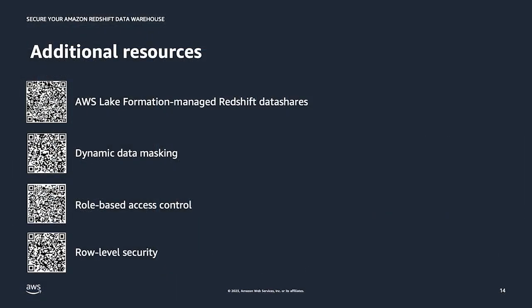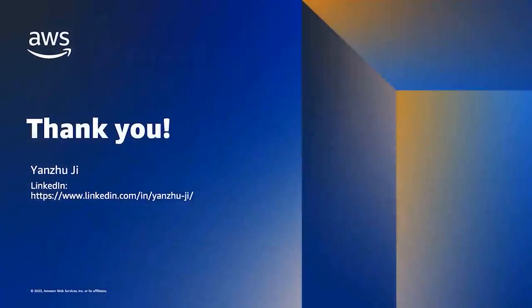That's it for the demo. I'm happy to have spent time walking through these six features for you. You can use them to build your access control and federation with Amazon Redshift native solutions. Here are some resource links — you can scan the QR code to get into the documentation, read through, and try it out on your own platform. Thank you for being with me. Here is my LinkedIn link, and I'm looking forward to connecting with you and hearing from you.